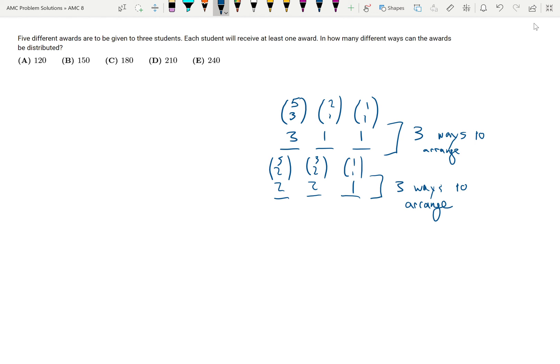First, we calculate: five choose three equals ten, two choose one is two, and one choose one is one. Since there are three ways to arrange this pattern, we get three times ten times two times one, which is three times twenty, so sixty ways to arrange the 3-1-1 configuration.